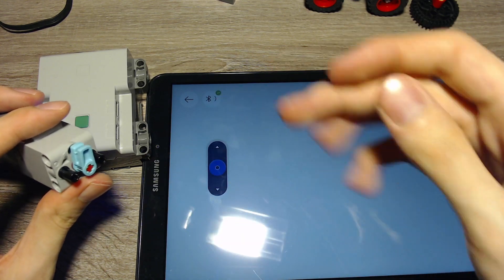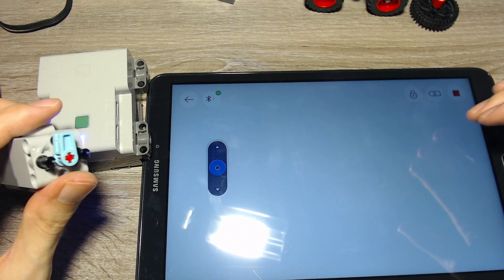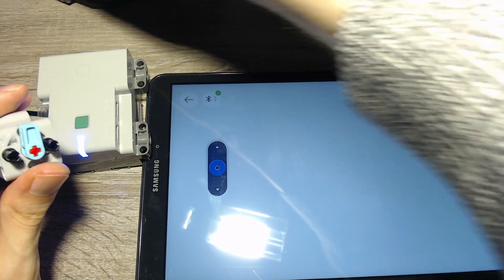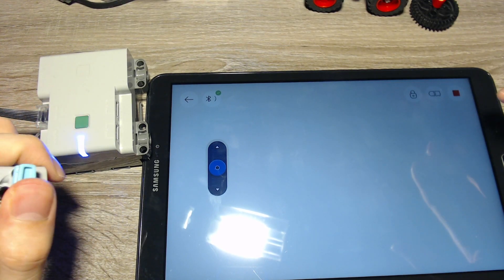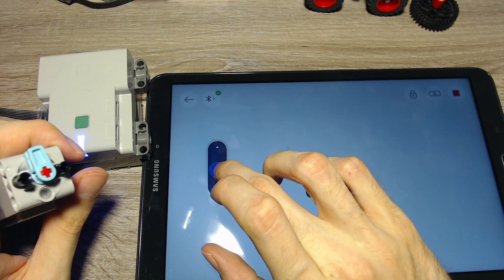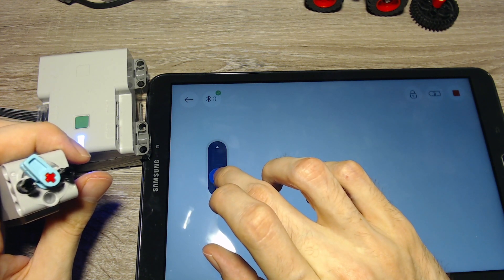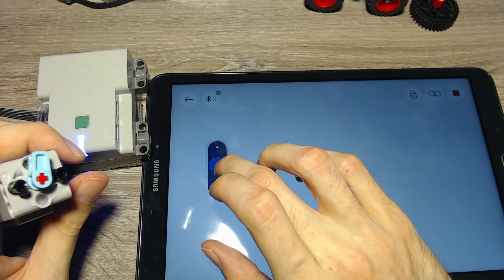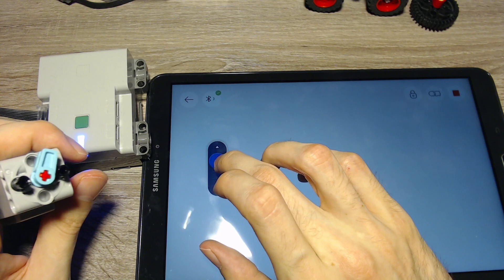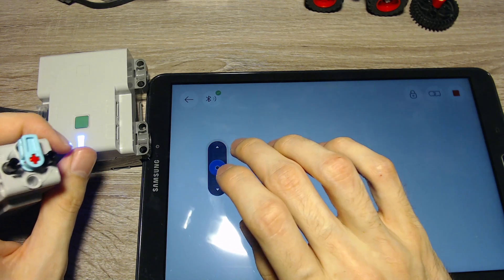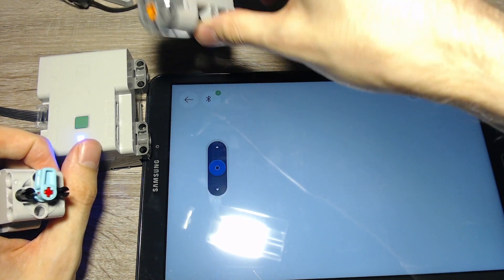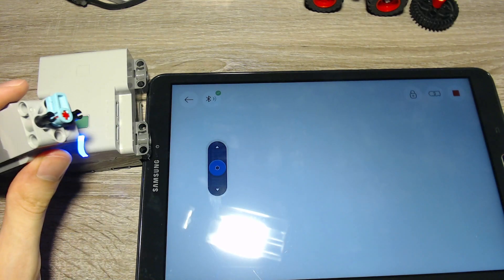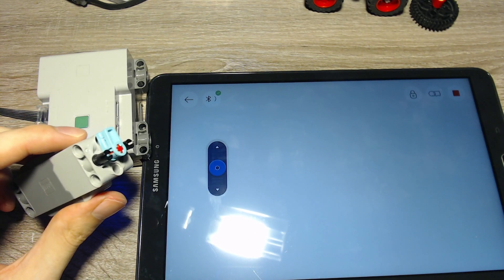Depending on the angle, and on the software implementation, it can even have many more positions than the Power Functions motor, but that depends on the implementation. So in this case, it has more than seven positions per direction. It gets really close to analog controls. And that's a huge advantage of the Powered Up system. You don't need these special servo motors anymore. Most of the Powered Up motors have included rotation sensors, and they can be used as servo motors just fine.